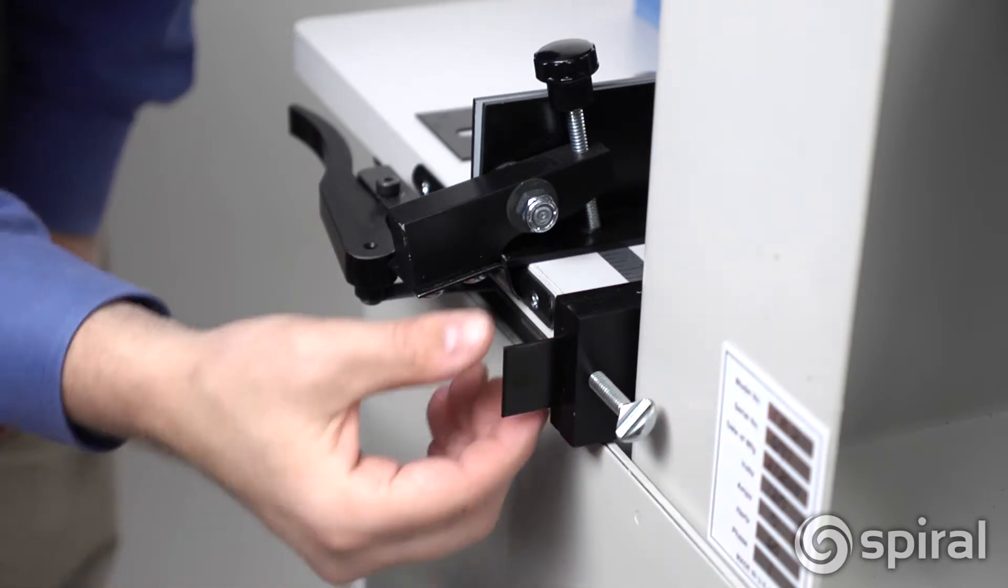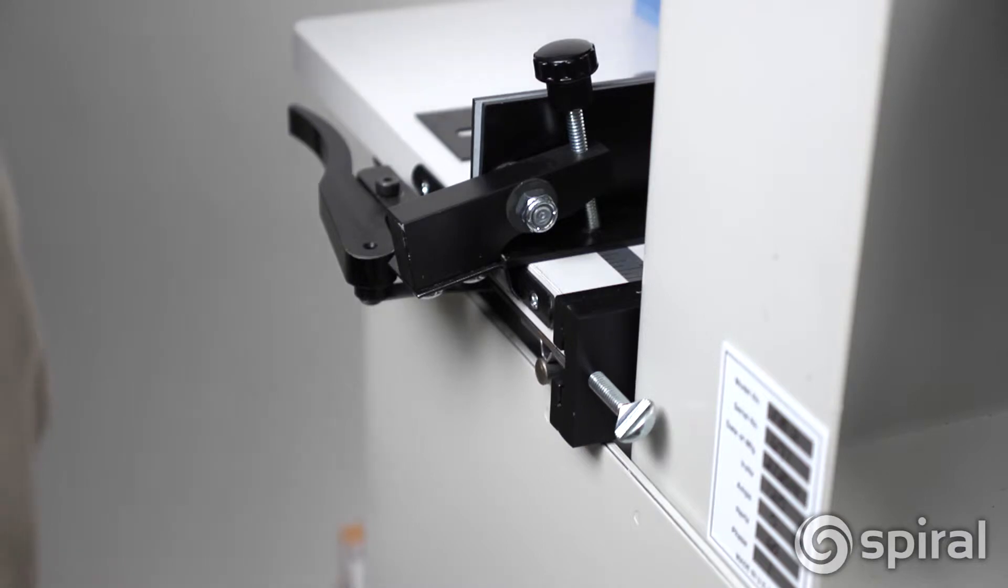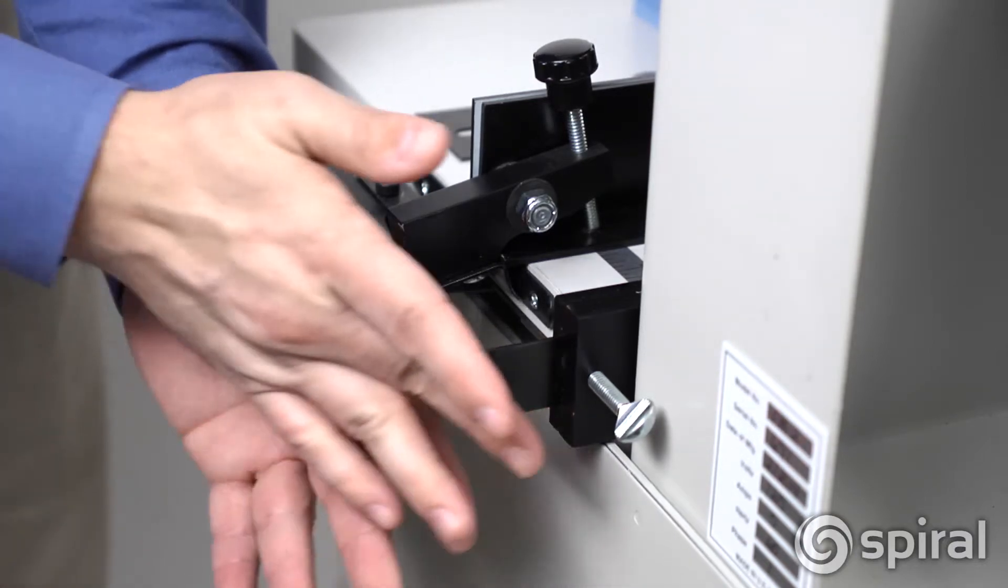To change the EasyGlide hole template, simply remove the locking screw from the back of the machine, slide the template out and slide a new template in and reinsert the locking screw and you are on to the next job.